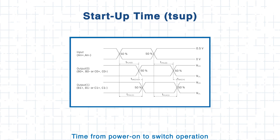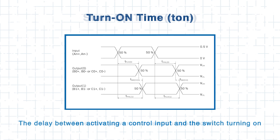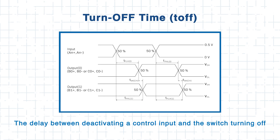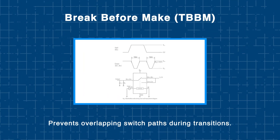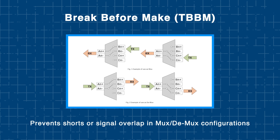The timing behavior of a switch determines how quickly and safely it reacts to control and power changes. Timing characteristics define how quickly the switch responds to power and control signals, and the TDS4 series highlights four key metrics. First, startup time: the delay from power-on to when the switch becomes operational. Next are turn-on time and turn-off time, representing delays between toggling control inputs such as OE or SEL and the corresponding switching action. The fourth metric is break-before-make, a protective feature ensuring no two signal paths are active simultaneously during transitions, preventing shorts or signal overlap in MUX-DEMUX configurations. Accurately accounting for these values helps designers avoid signal errors and maintain system stability.